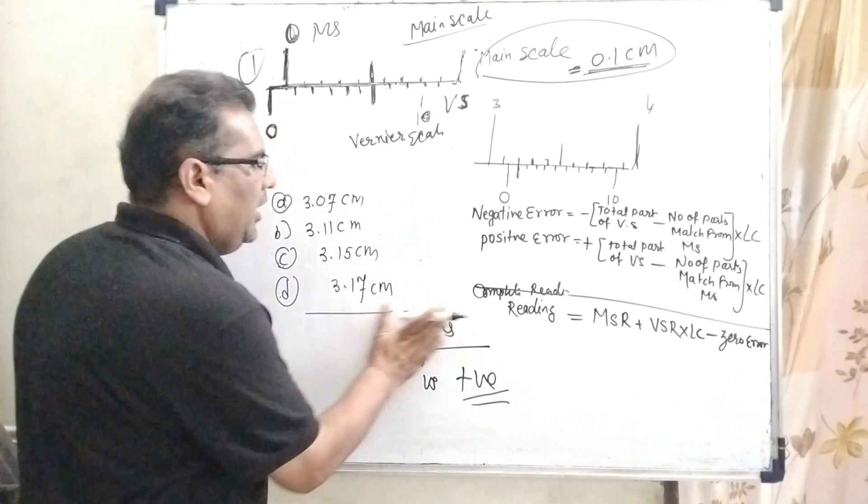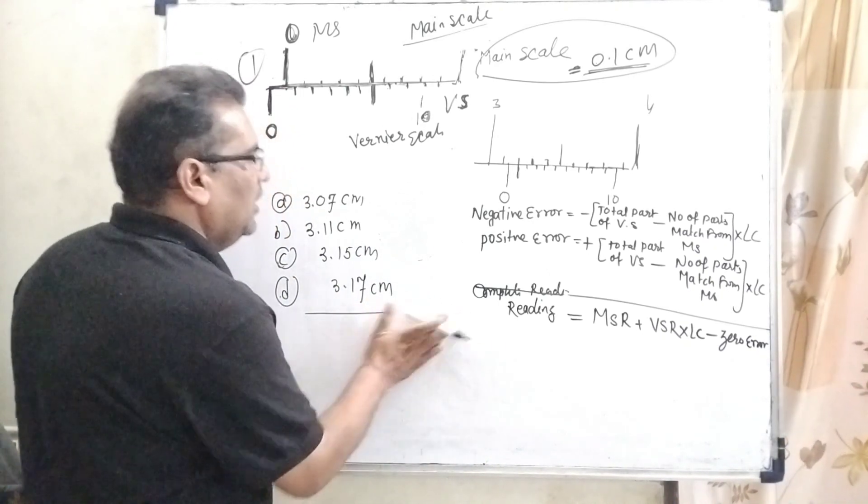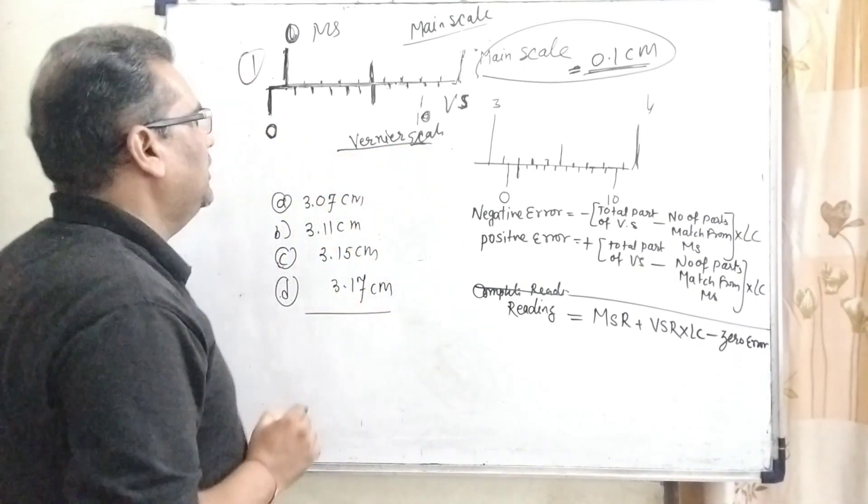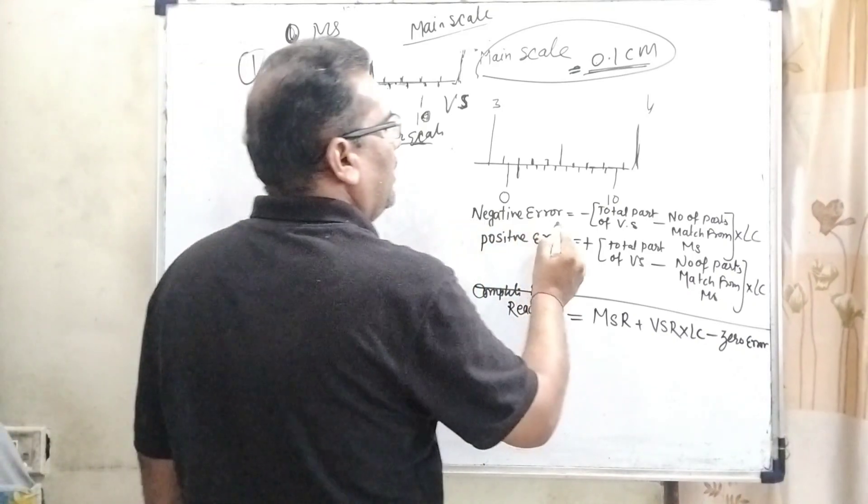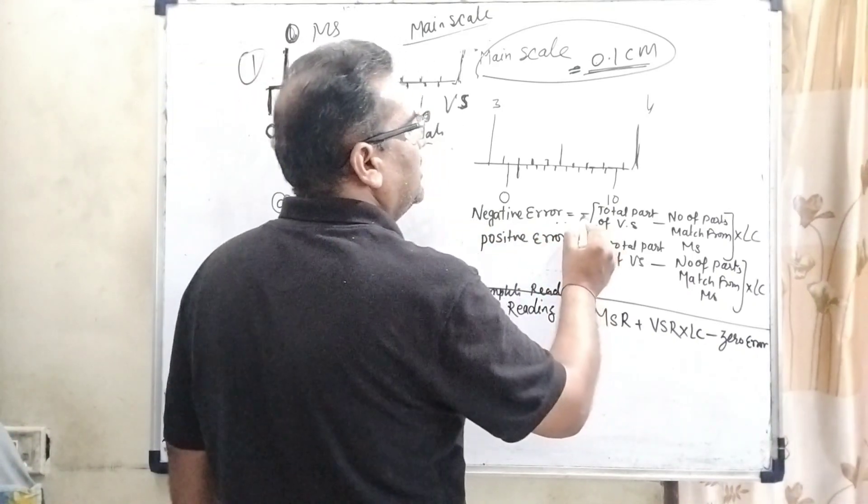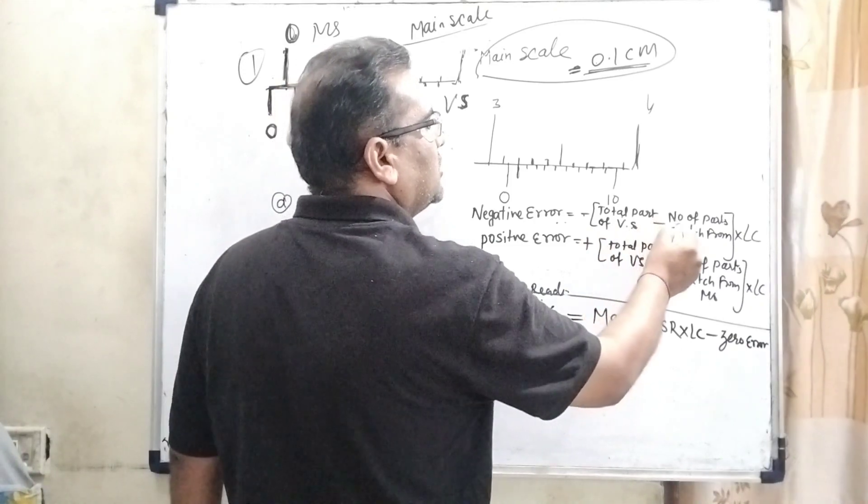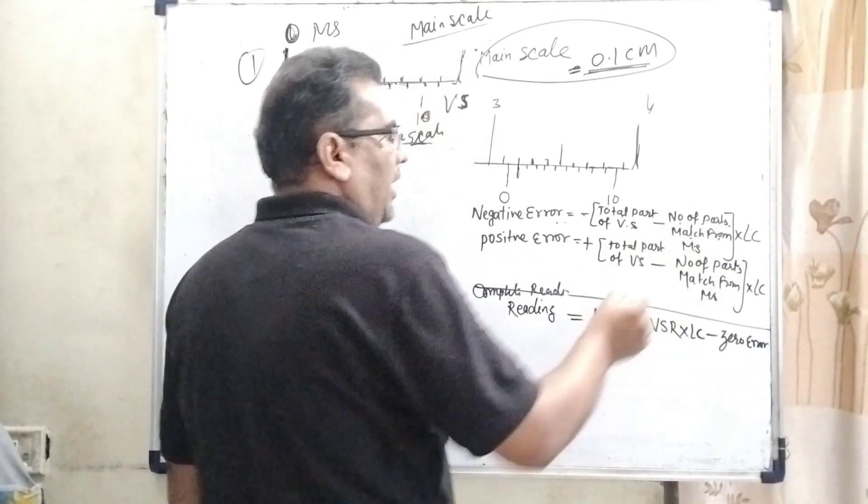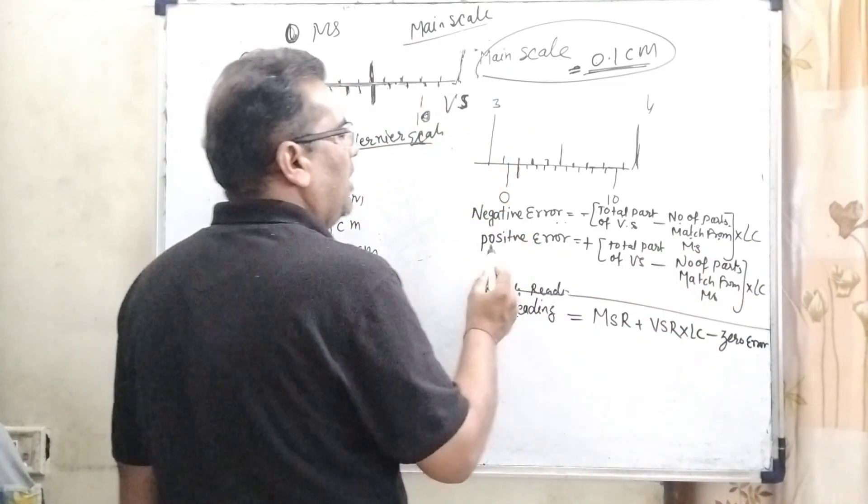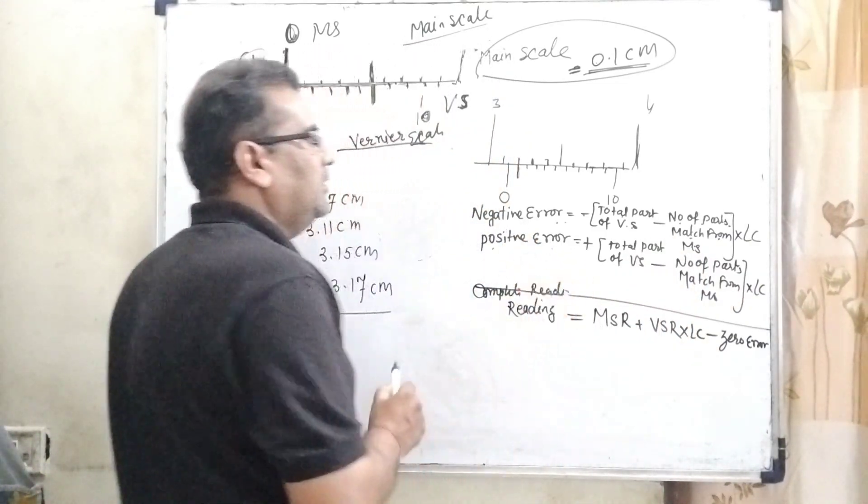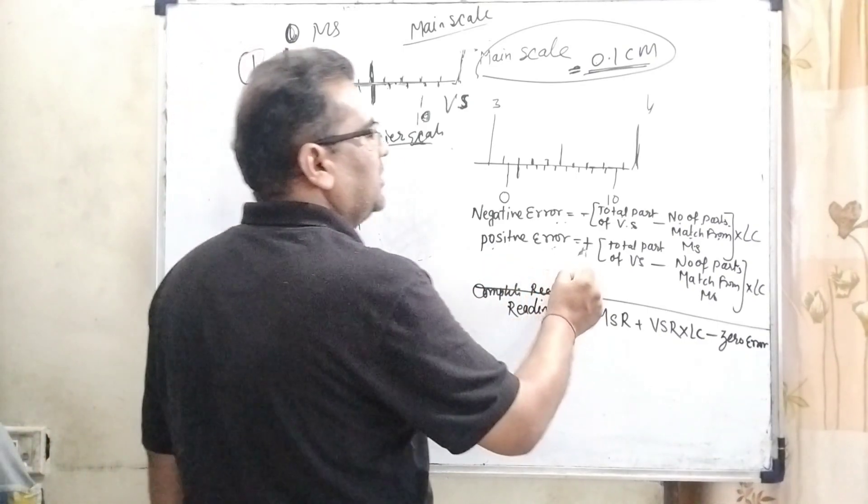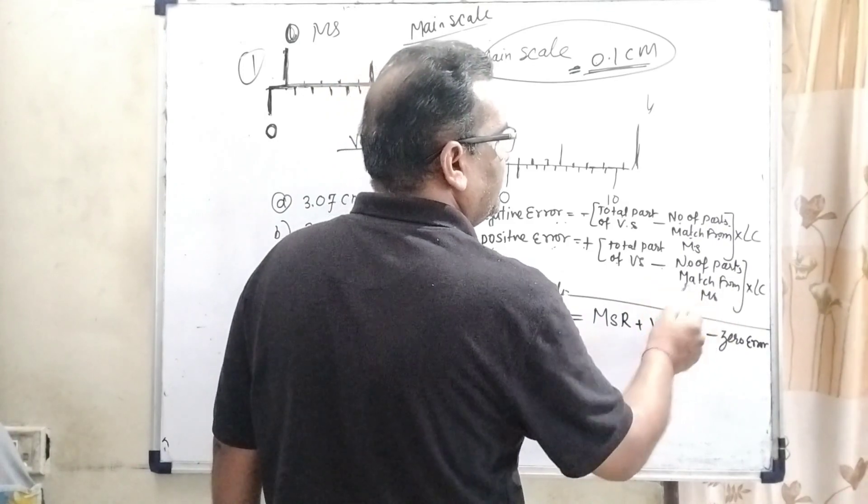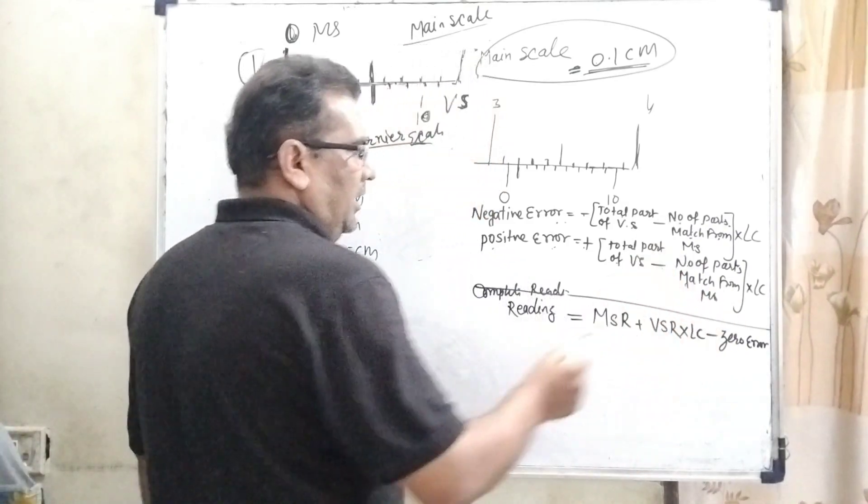Let us first calculate negative zero error. How can we calculate the negative zero error? Here, negative zero error formula is minus (total parts of Vernier scale minus number of parts matching from the main scale) into least count. And similarly, the positive error formula is plus (total parts of Vernier scale minus number of parts matching from the main scale) into least count.